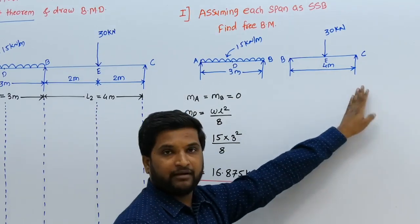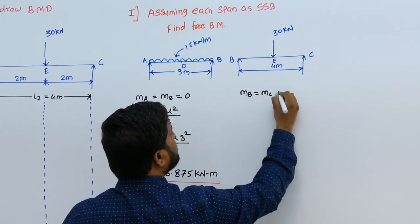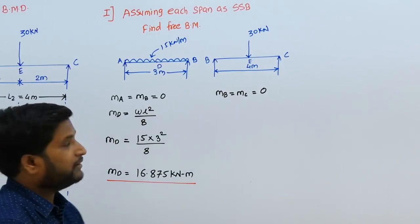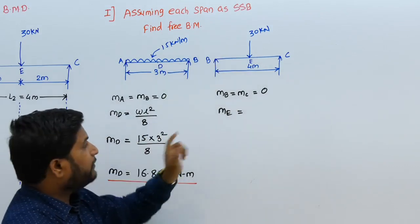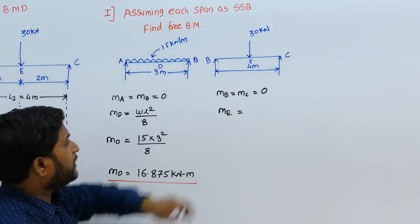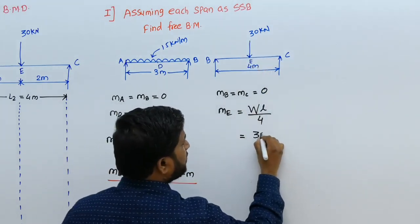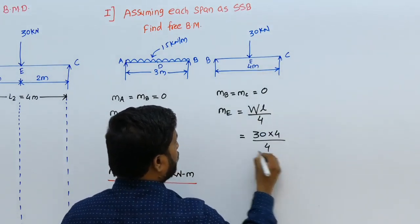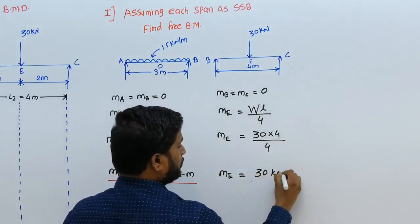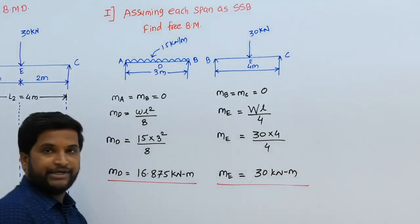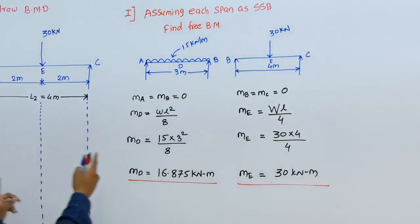For span BC, also simply supported, free bending moments at B and C are zero: small mB = small mC = 0. At point E (center of BC), the maximum free bending moment for a simply supported beam with central point load is WL/4 = 30 × 4 / 4 = 30 kilonewton meter. So mE = 30 kNm.